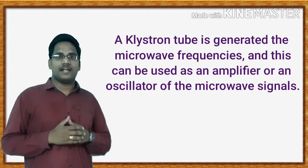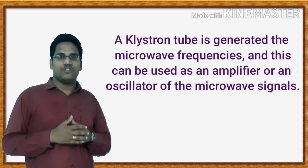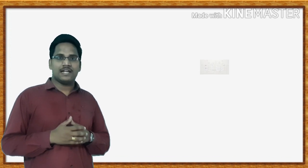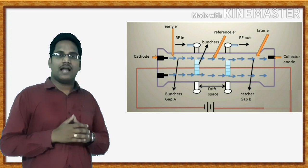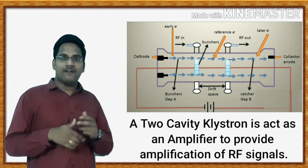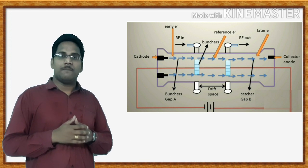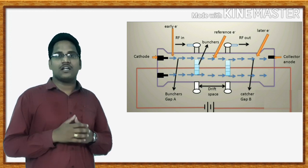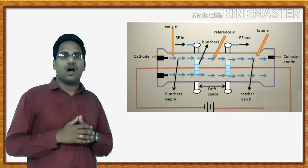A Klystron tube generates microwave frequencies and can be used as an amplifier or an oscillator of microwave signals. We have already discussed what is a Klystron amplifier — if you want to watch that video, just click on the above 'i' symbol and the link is also provided in the description. A two-cavity Klystron acts as an amplifier to provide amplification of RF signals, but it can be converted into an oscillator; however, some disadvantages are associated with it, so the same structure cannot be utilized for generating oscillations.